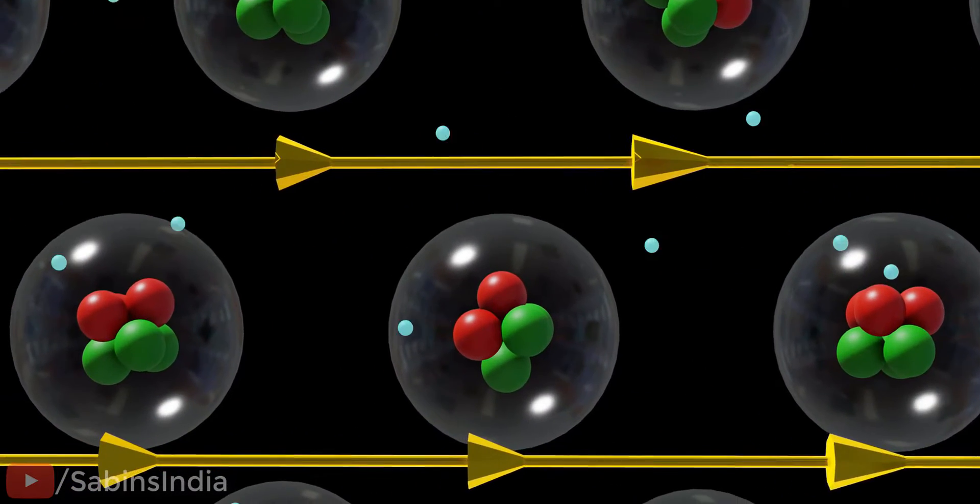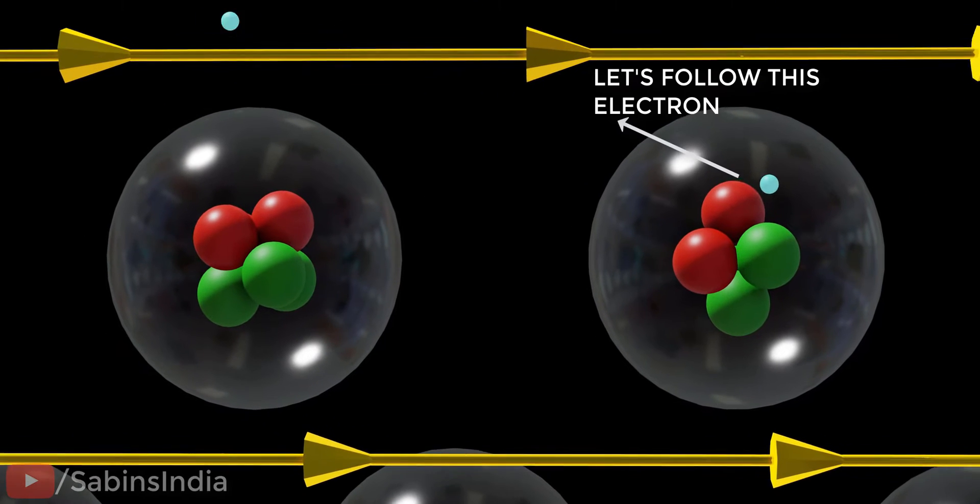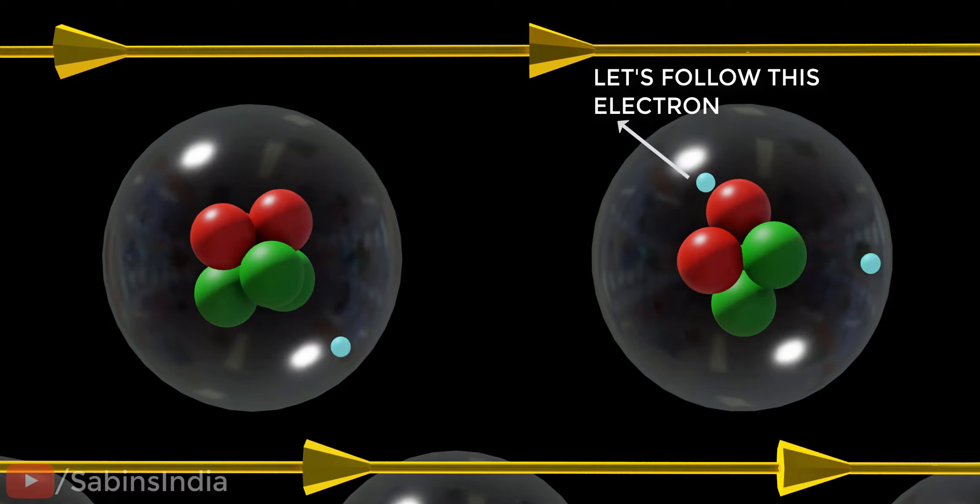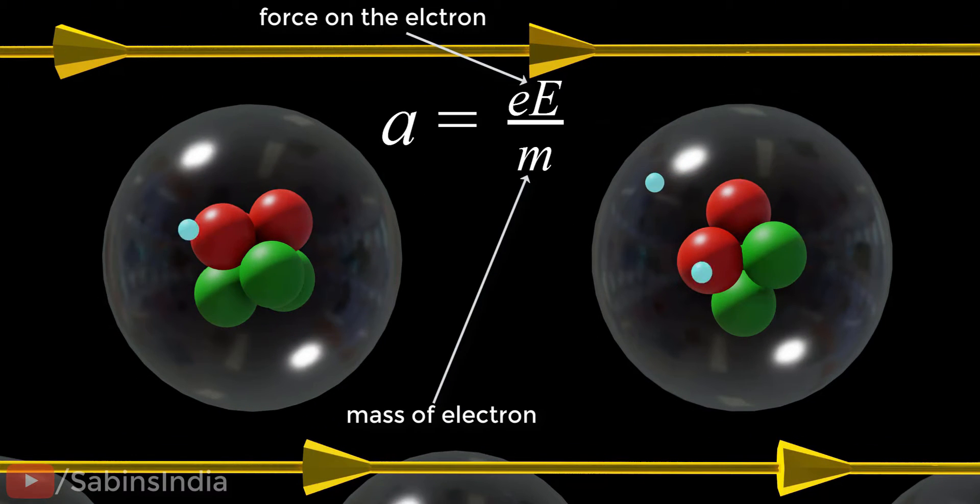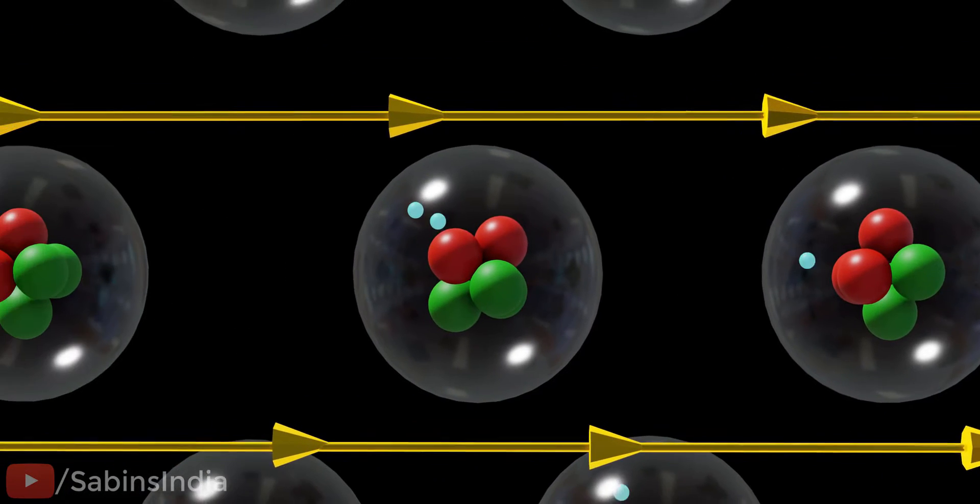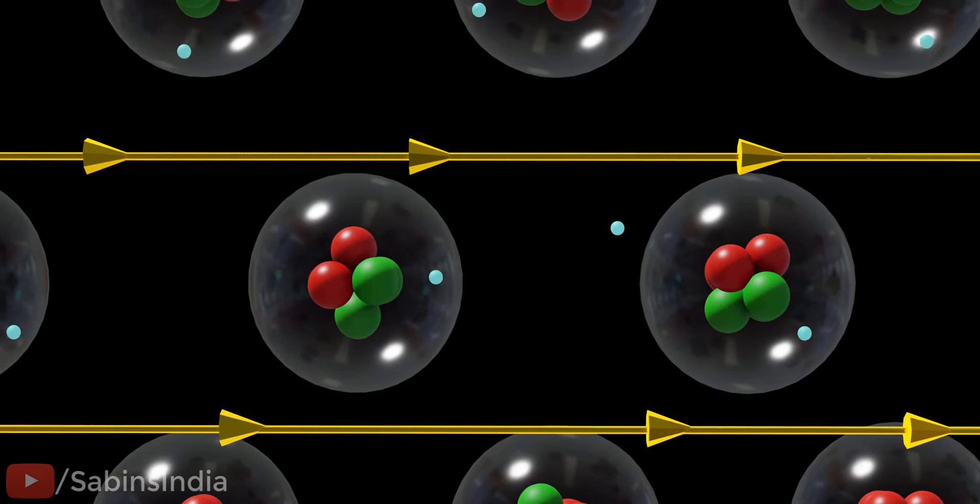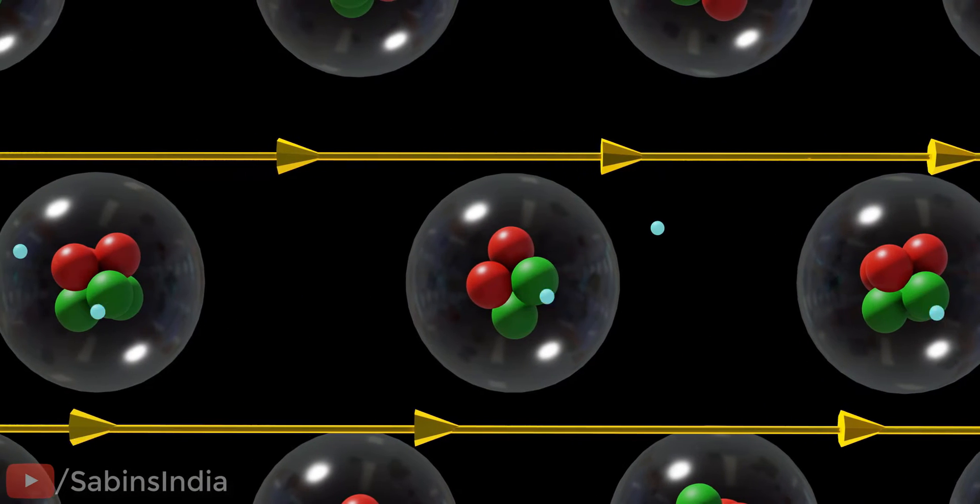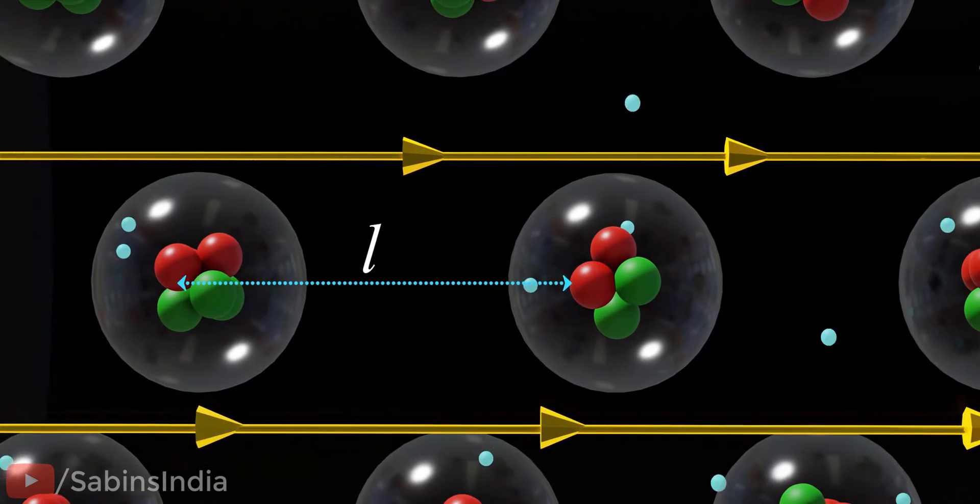Here comes the brilliant way to find the drift speed. Let's follow an electron. The electron accelerates due to the effect of the electric field. However, very soon it will collide with a nucleus and its travel will come to a halt. Then it will accelerate and collide again. Let's assume the average length of this collision is L and the average time of the collision is T.